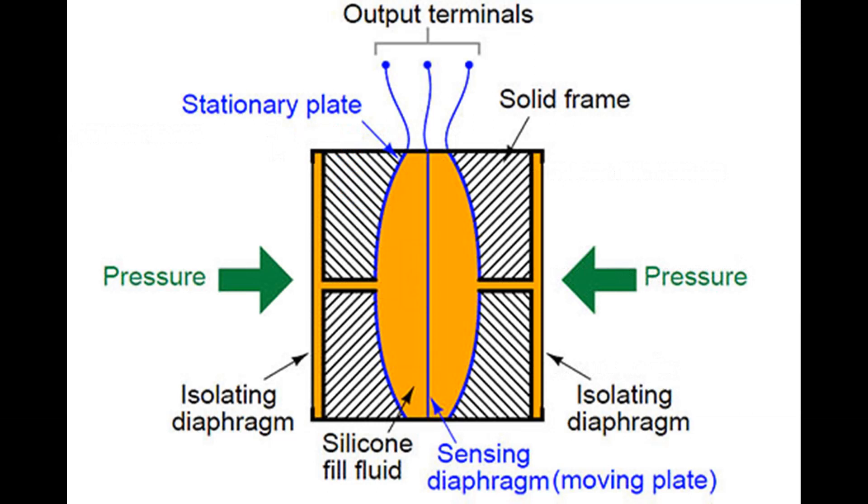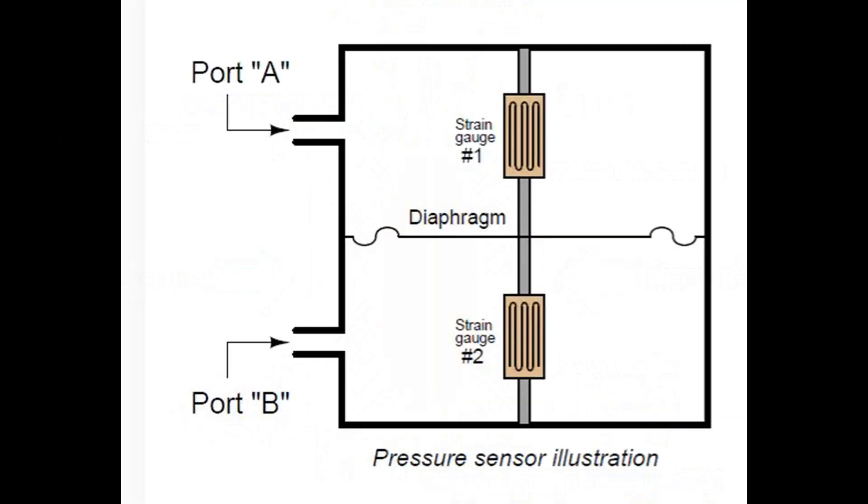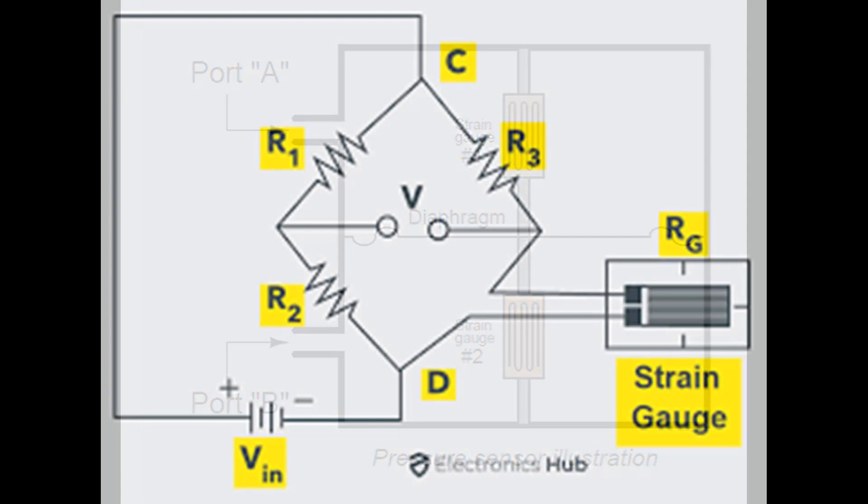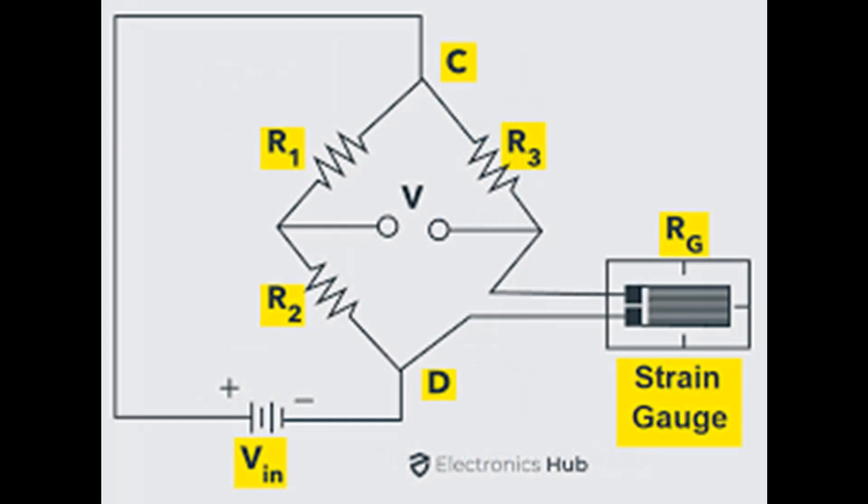It consists of a diaphragm or membrane exposed to the fluid pressure. As the fluid pressure changes, it causes the diaphragm to deform. Many modern pressure sensors use strain gauges attached to the diaphragm. When the diaphragm deforms due to pressure, the strain gauges undergo mechanical deformation, changing their electrical resistance. The change in resistance is proportional to the applied pressure.